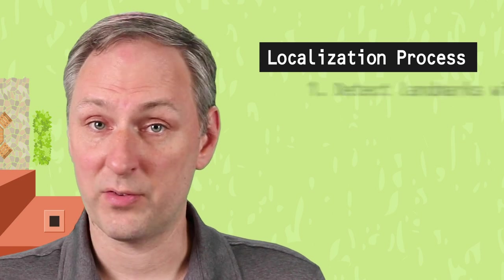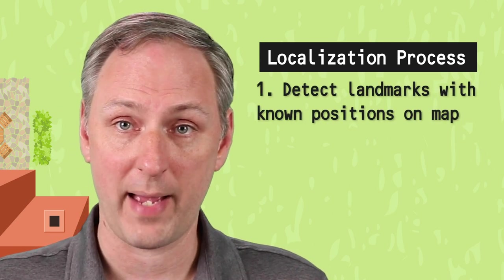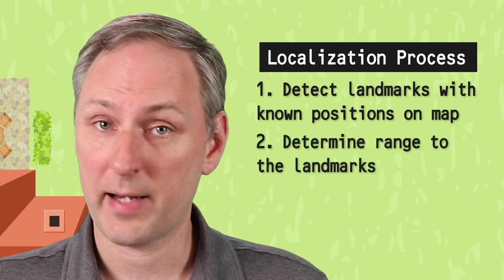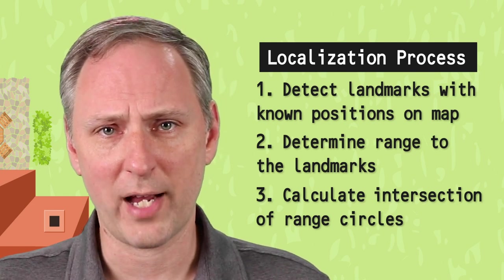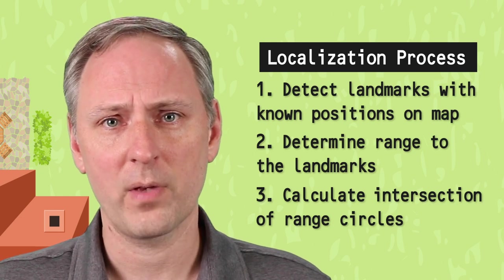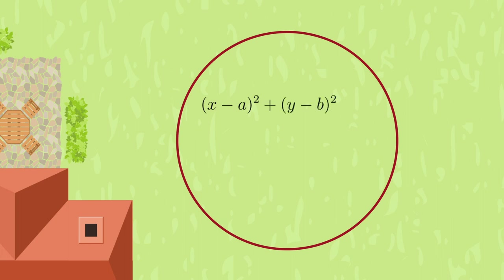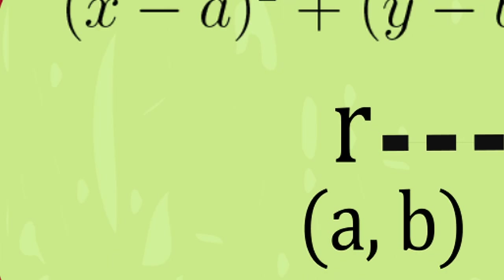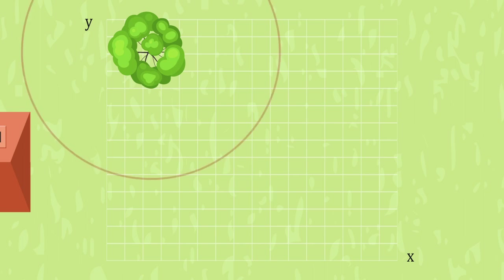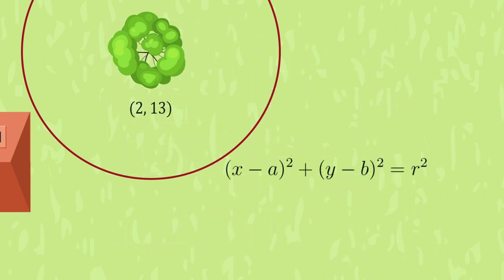So the general flow is: detect at least three landmarks whose position is known on the map, determine the range to each of these landmarks, calculate where these range circles intersect. This intersection point is the robot's position. Now, let's calculate how to find that position. If we recall from geometry, the formula for a circle is (x - a)² + (y - b)² = r², where (a,b) is the coordinate of the center of the circle, and r is the radius. Let's go back to looking at the tree. We know we are 10 meters from the tree. From our map, we know the tree is located at (2, 13). So if we just consider the tree, we have the equation (x - 2)² + (y - 13)² = 10².